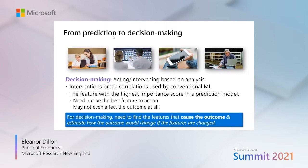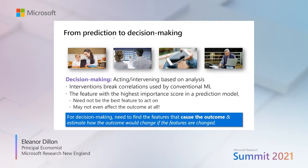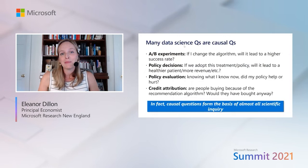Prediction models can give us really misleading answers to causal questions, because the feature that is the best predictor may not have a direct causal effect. For example, past sales may be a good predictor of future sales, but if we did something to artificially inflate sales today, we wouldn't necessarily expect that sales would increase a lot in the future. Many business-relevant questions that data scientists are thinking about are really better served by causal models rather than prediction models.